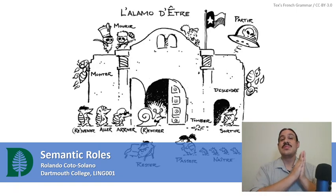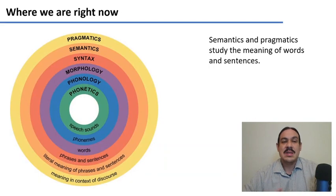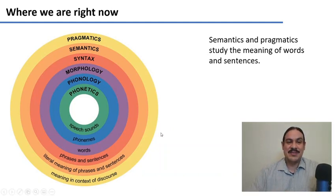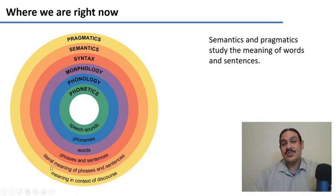We're going to start our transition from syntax to semantics by studying semantic roles. Let's take a quick look at where we are now. We've studied phonetics and phonology, which deal with sound, and morphology, which is the structure of words. Syntax is the structure of phrases and sentences. We'll start with semantics, which deals with the meaning of phrases and sentences — the literal meaning.